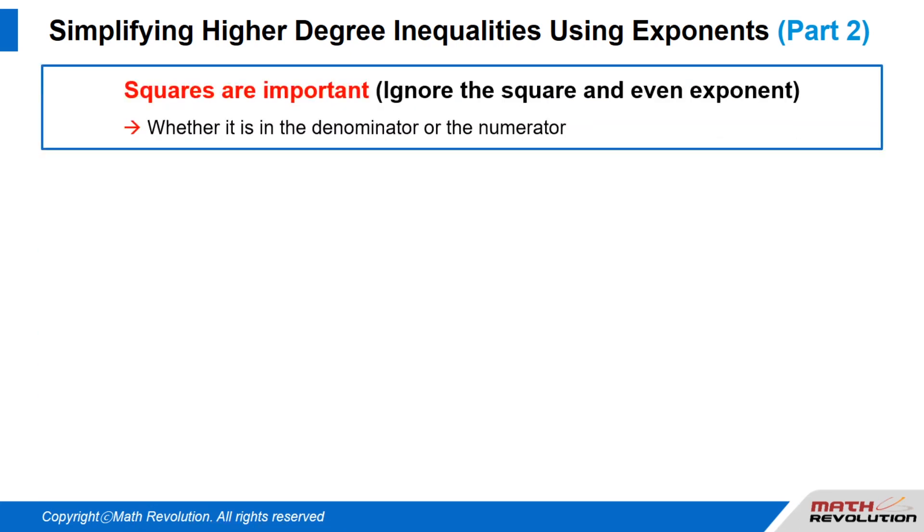Squares are important. Ignore the squares and even exponents. Square factors and even exponent factors are always positive, so multiplying or dividing a term by a non-zero square factor or a non-zero even exponent factor does not affect the direction of the inequality sign.